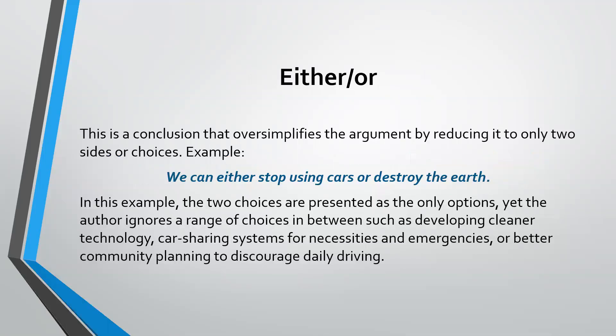Either/or is a conclusion that oversimplifies an argument by saying there are only two options. For example: we can either stop using cars or destroy the earth. You and I both know there are other options, such as creating cars that are perhaps less destructive to the earth.